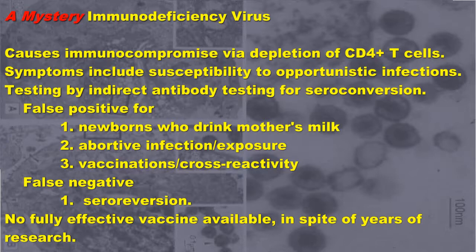Symptoms include susceptibility to opportunistic infections. Testing is by indirect antibody testing for seroconversion by ELISA. False positives are known for newborns who drink mother's milk, abortive infections or exposures, vaccinations, or cross-reactivity.